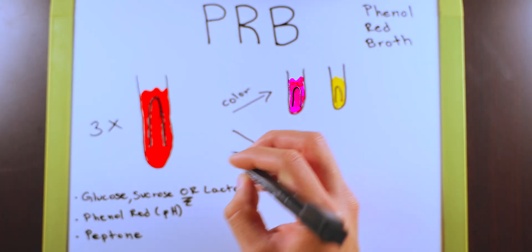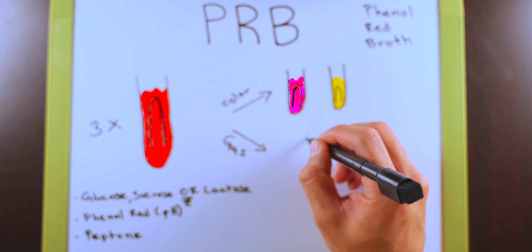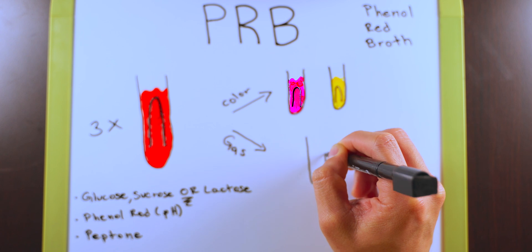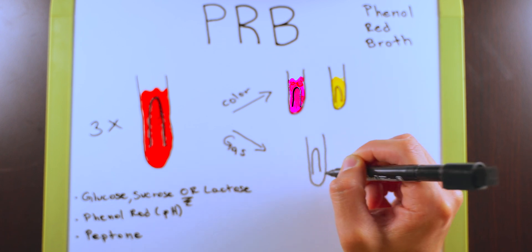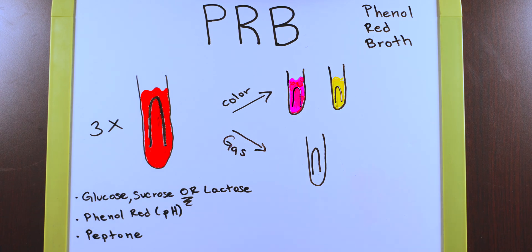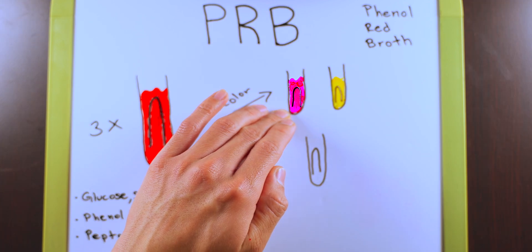The other thing that we want to look for is if we have gas production. For this, we're going to want to turn to our Durham tube. So it doesn't matter whether you have a pink or a yellow test tube, you want to look carefully at the Durham tube and see if there's any gas production. It's also going to be helpful if you grab a control and you can use the same one that you did to determine whether you have a pink color change or not.